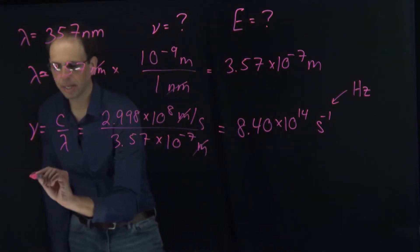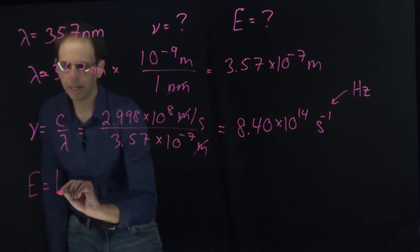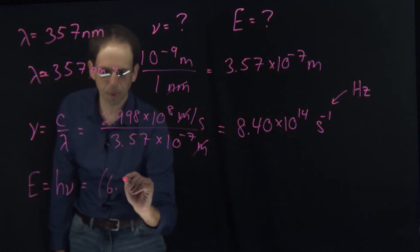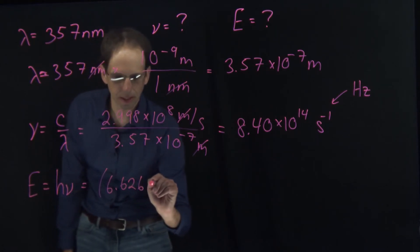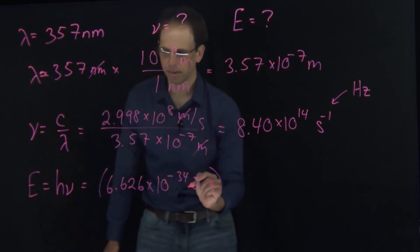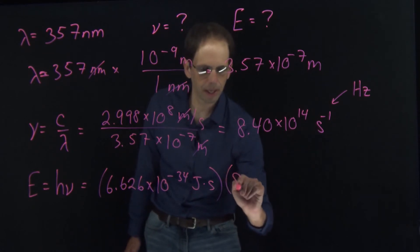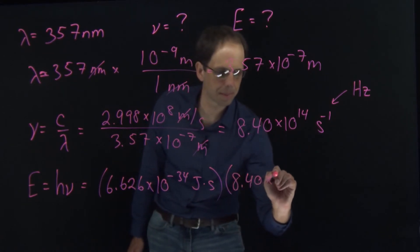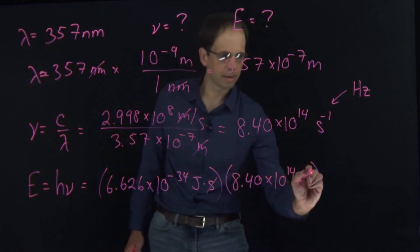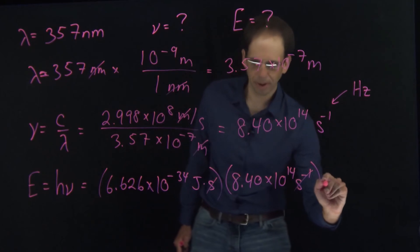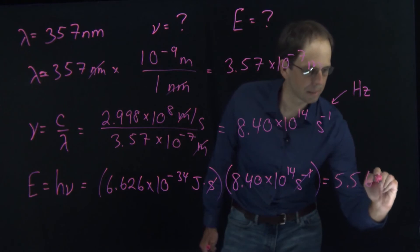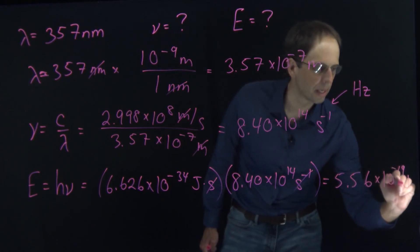Finally, if I want to find the energy content, I know that E is equal to h nu. It's Planck's constant, again, 6.626 times 10 to the minus 34 joules times seconds, multiplying this by our frequency, 8.40 times 10 to the 14th inverse seconds. My seconds and inverse seconds cancel, and I'm left with 5.56 times 10 to the minus 19 joules.